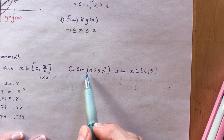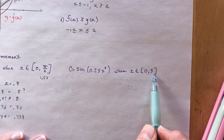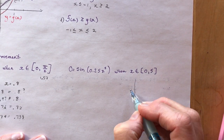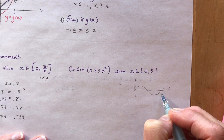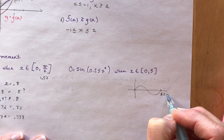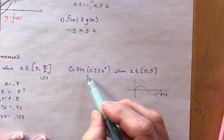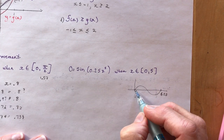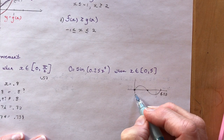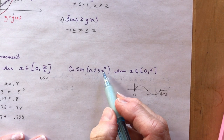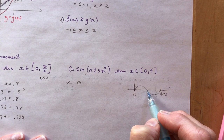Next: 0 = sin(0.25x²) where x is between 0 and 5. If x is between 0 and 5, I know sin(0) = 0 and sin(π) = 0. So x = 0 is definitely one solution. But how do I get the other solution?